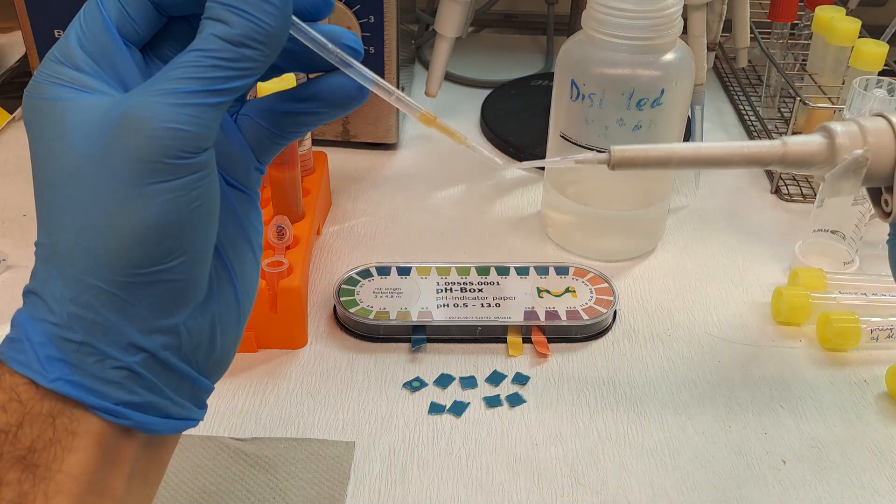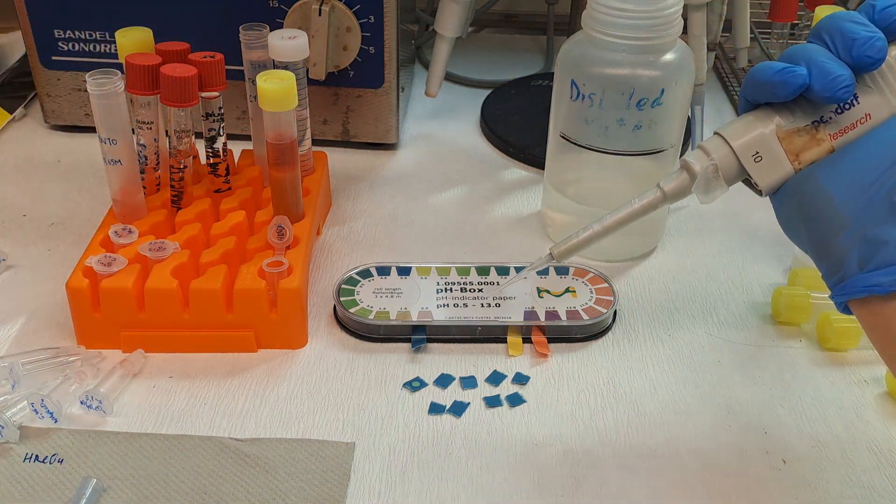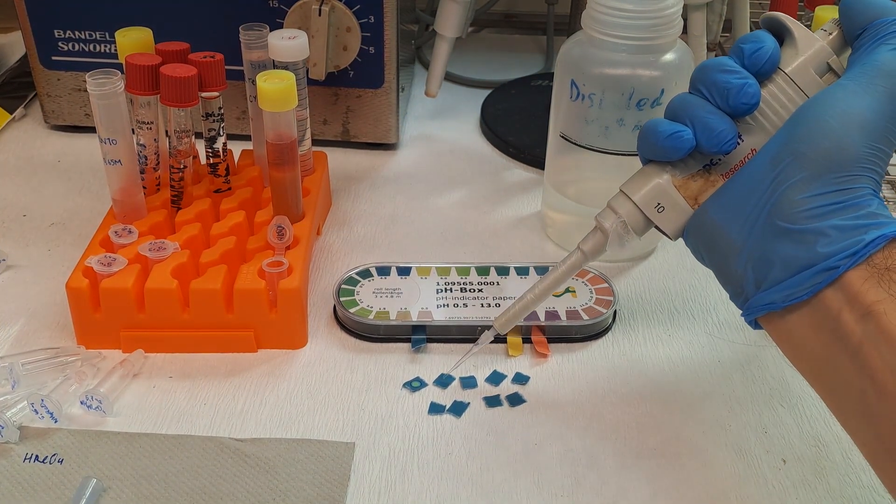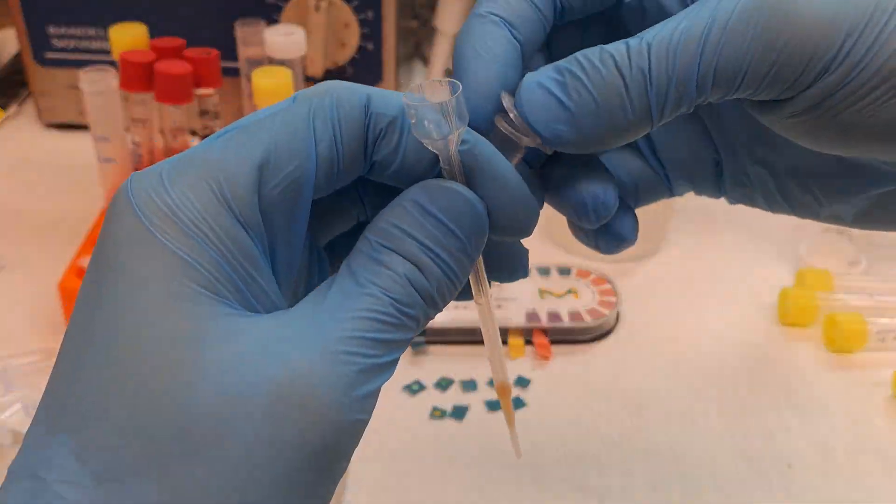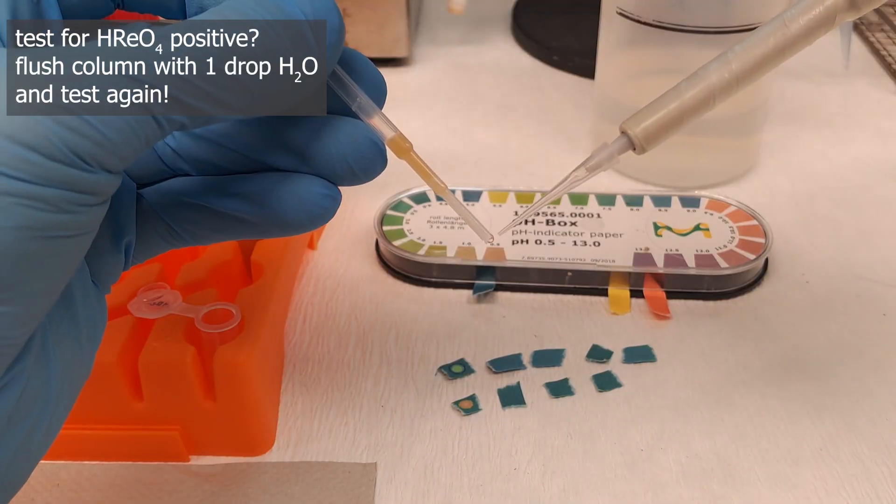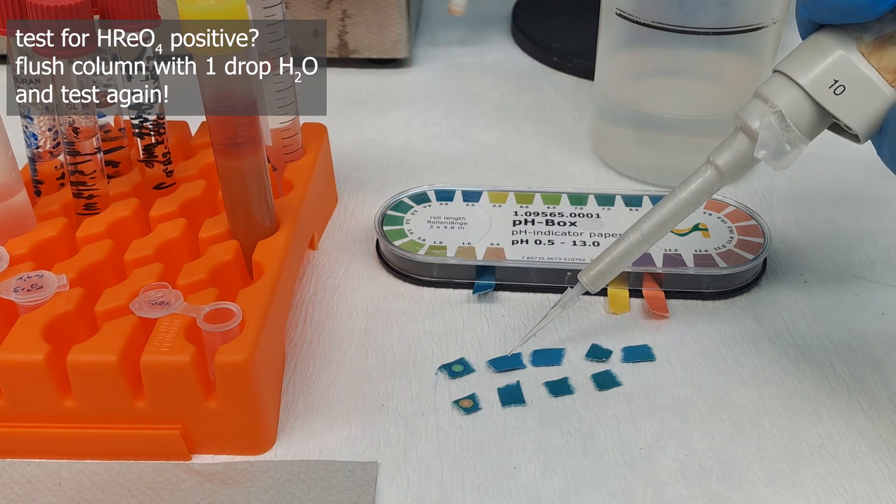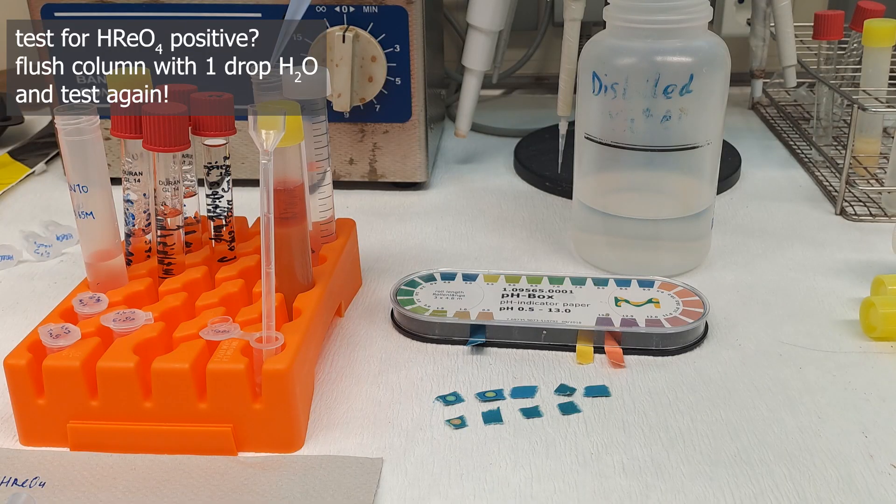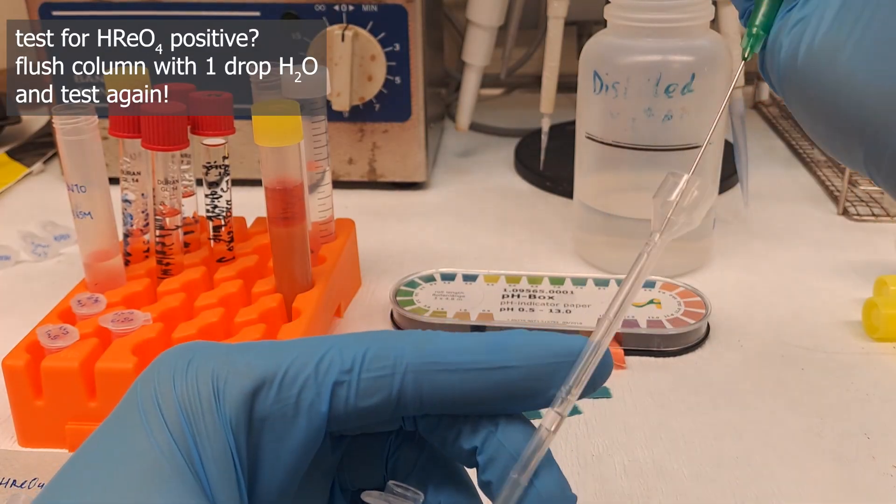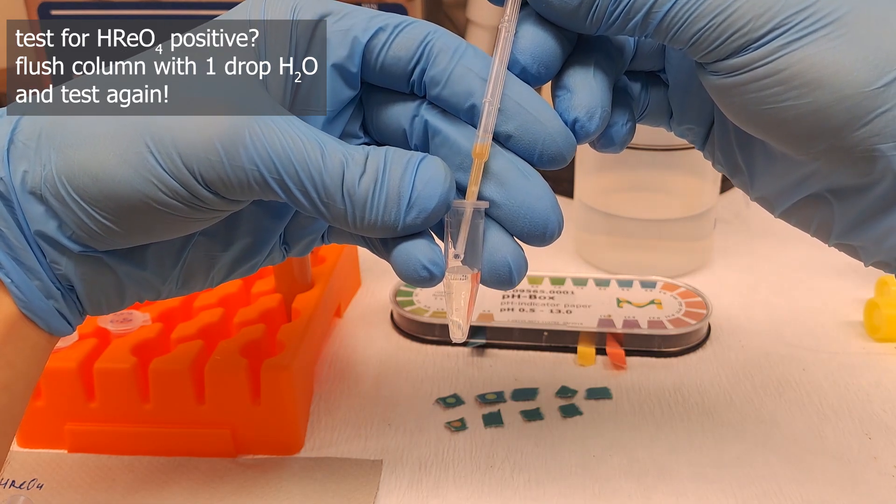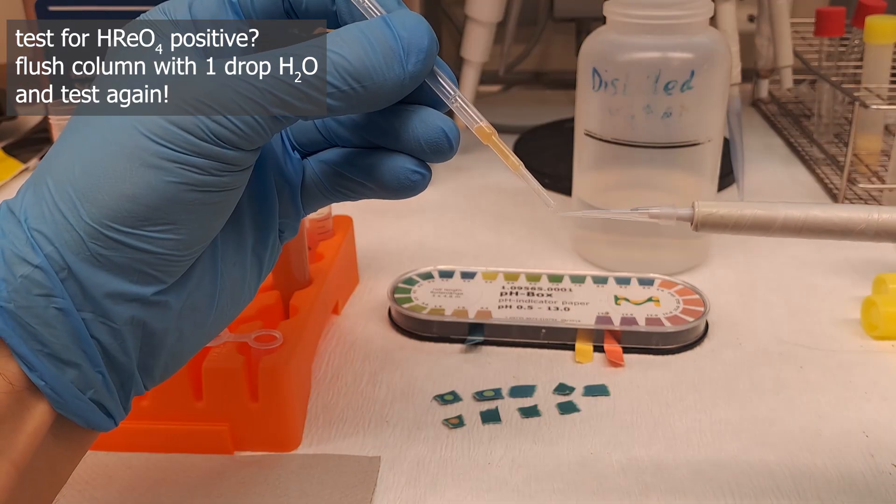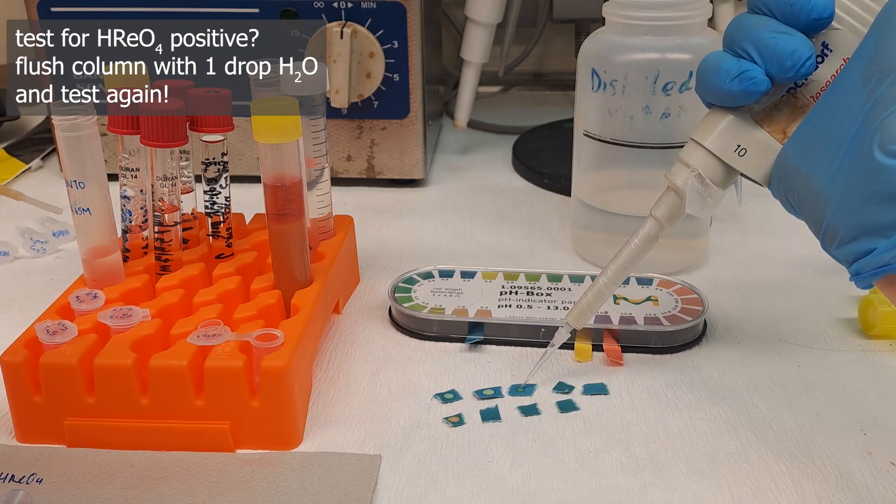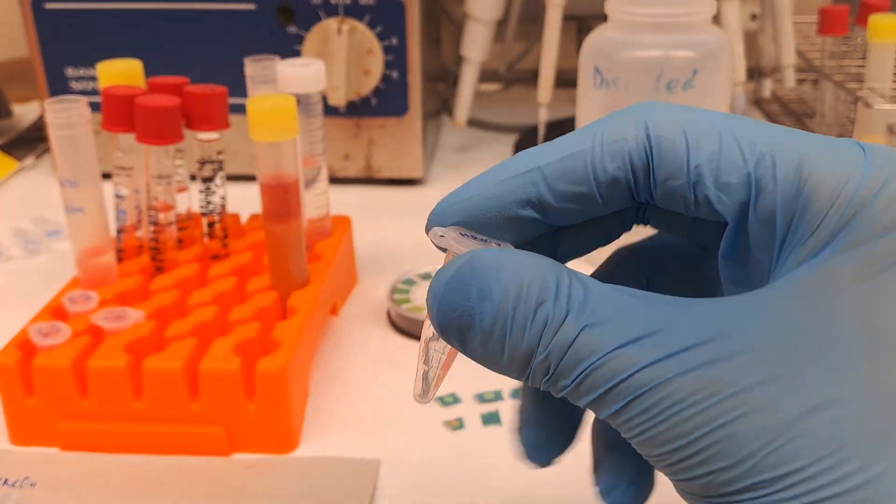How do we test for acids? With pH paper. The pH paper shows no longer acidity, which means that all of the acid is in the Eppendorf tube. This is what it would look like if there were still some perrhenic acid in the last drop. So what do we do in this case? We just add more water and once again pass it through and we will take a tiny sample and check if the acid is now out of the column. And there you go. We have perrhenic acid.